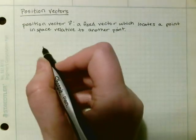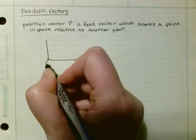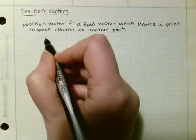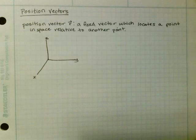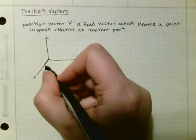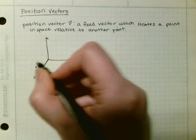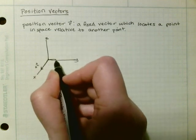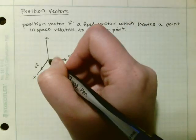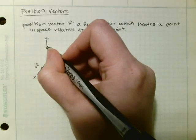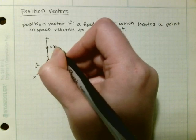All right, so if we have our three-dimensional system, Y, X, Z. All right, and if we had a vector X in the I direction, Y in the J direction, and Z in the K direction.